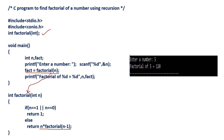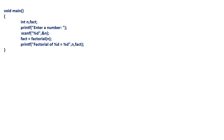That means we are calling the same function again by passing argument n-1. In this fashion, a recursive factorial function works. This is the sample output: if we give input value 5, the output is factorial of 5 is equal to 120.